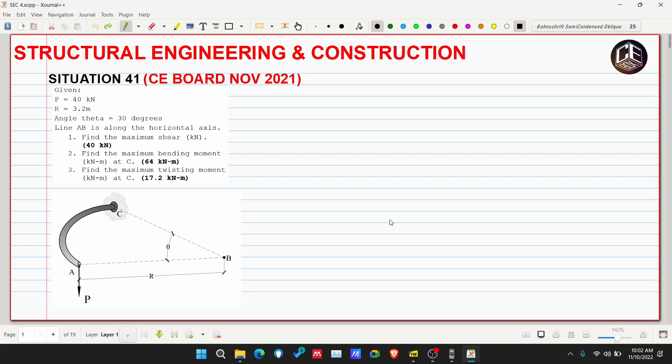Hey guys, welcome back to CE Box Tutorial Channel. This is our Situation Number 41 from CE Board Exam November 2021 for Structural Engineering and Construction. We have given P and r, where P is equivalent to 40 kilonewtons and r, which is the radius in the arc, is equivalent to 3.2 meters, and the angle theta is equivalent to 30 degrees.